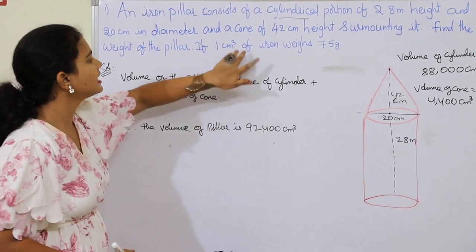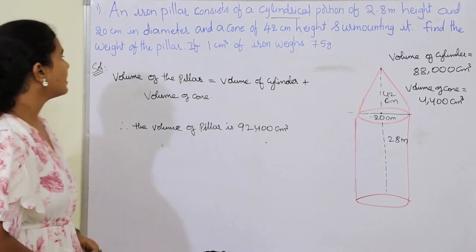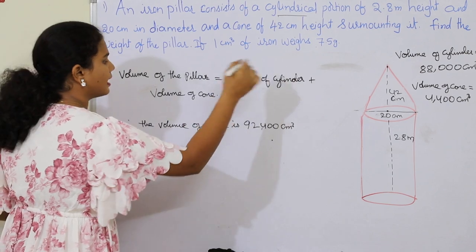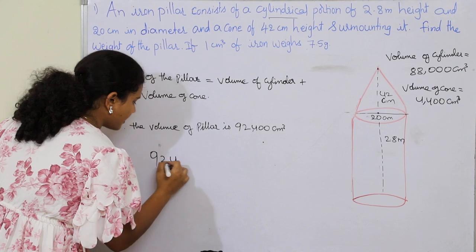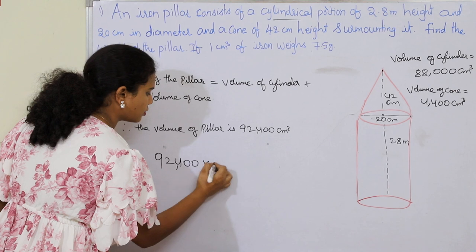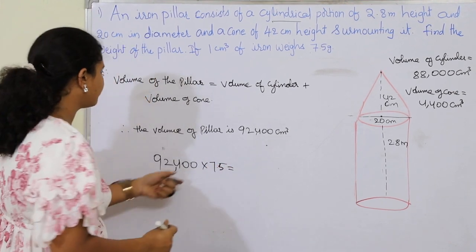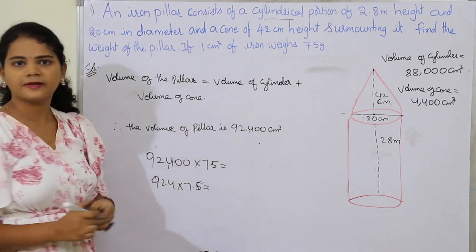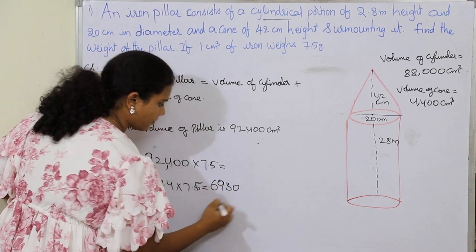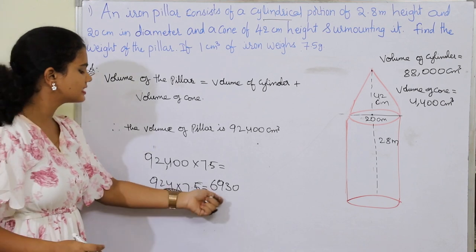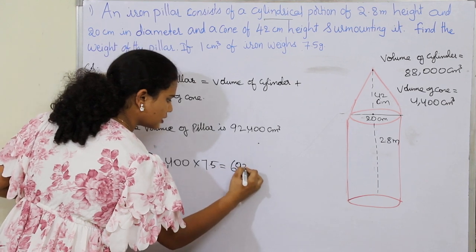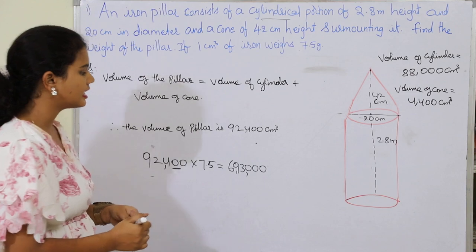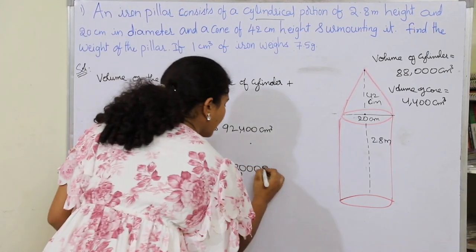The question says if 1 centimeter cube of iron weighs 7.5 grams, find the total weight of the pillar. So multiply 92,400 into 7.5. First, 924 into 7.5 gives 6,930, then adding two zeros gives 6,93,000 grams.